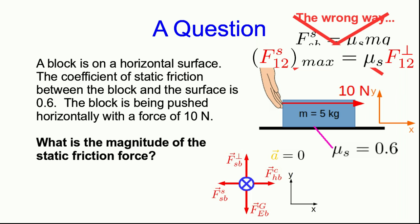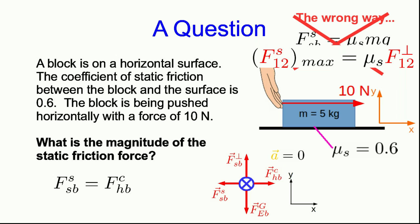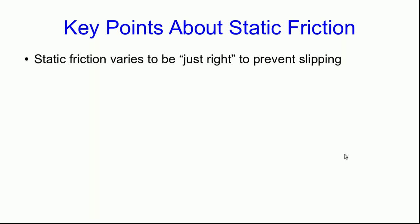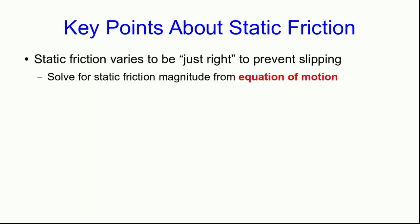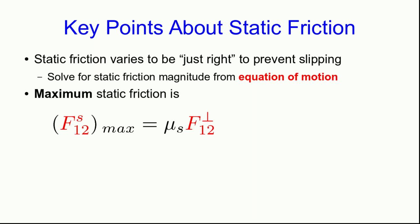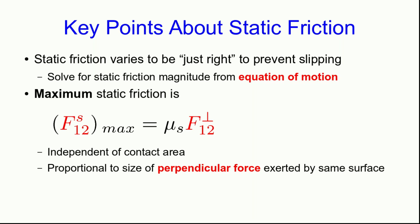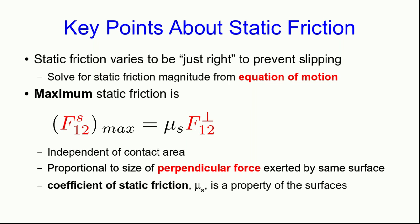You could set up your axes, draw your free body diagram, write the x-component equation of motion, and solve for the force of static friction — finding its magnitude equals the magnitude of the force your hand exerts on the block. To summarize: static friction always varies to be just right to prevent slipping, so we generally have to solve for it from the equation of motion. Its maximum value is given by mu s times the perpendicular force, is independent of contact area, and mu s is a property of the surfaces.